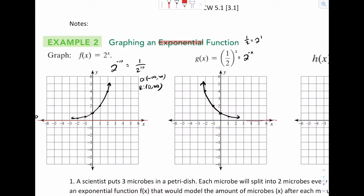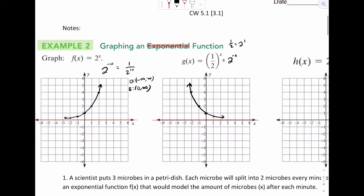And again, you're going to put your asymptote right there. For domain and range, it's going to be pretty similar. Domain is everything, and the range is 0 to infinity.